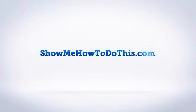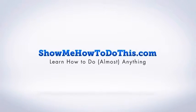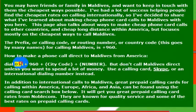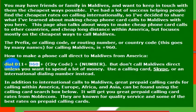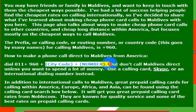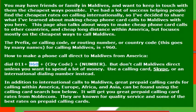Calling the Maldives is very simple. All you have to do is dial the international dialing code 011, and then the country code. So this is calling from the United States — you would dial 011, then the country code 960, and then the phone number you want to call. The country code for the Maldives is 960.